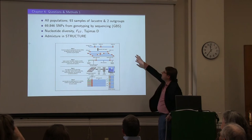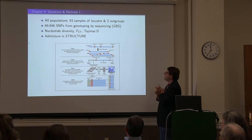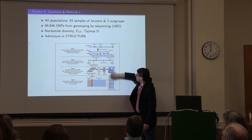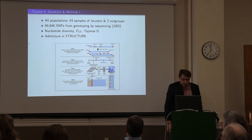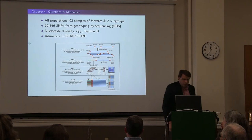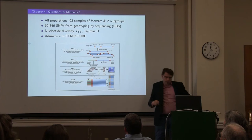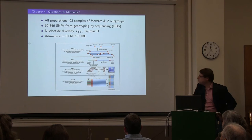I have 93 samples of lacustre from all five populations, and then two outgroups: a group of caeruleum and one of occidentale, and about 70,000 single nucleotide polymorphisms from genotyping by sequencing. If you don't know what that is, basically you digest the DNA with a restriction enzyme, attach DNA barcodes so you know what sample it came from, pool everything together, sequence it all, and then pull out the individual reads. We also looked at nucleotide diversity, fixation index, and Tajima's D — which tests for deviations from neutral evolution — and then looked at admixture using the program STRUCTURE.